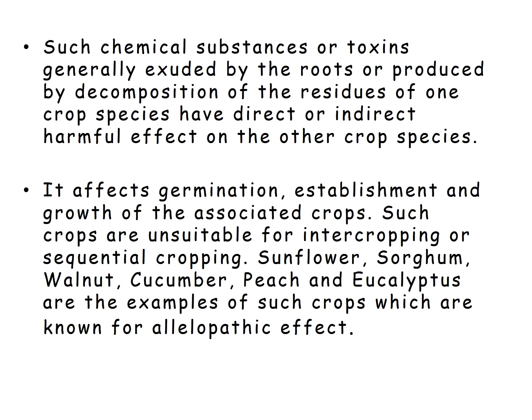It affects the germination of the other crop. Such crops are unsuitable for intercropping or sequential cropping, as these crop species are not suitable for growing together. If germination is affected or growth is affected, these crop species should not be used for intercropping. Sorghum, walnut, cucumber, peach, and eucalyptus are examples of crops known for their allelopathic effect.